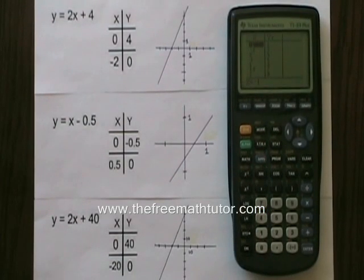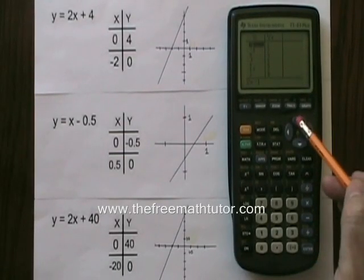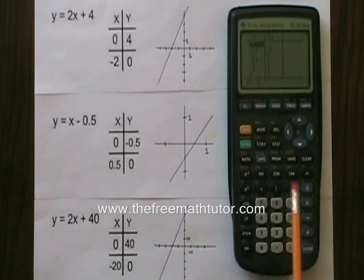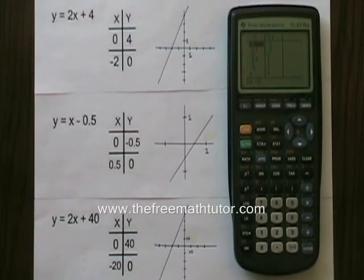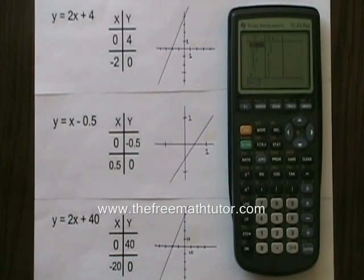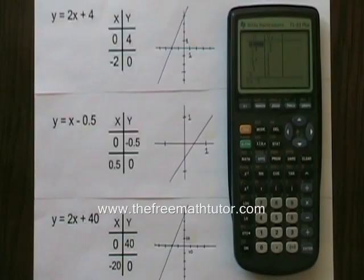But this table is actually a lot bigger than what we see right now. And if I press this up arrow button a few times, now I can see the x-intercept, negative 2, 0. And at the moment I can still see the y-intercept at the same time.